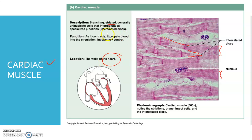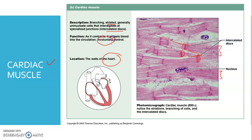Cardiac muscle also consists of intercalated discs. You can see the intercalated discs here. The function of cardiac muscle is that as it contracts, it propels blood into the circulation. We know that the heart's role is to propel blood for circulation. Importantly, all of these functions happen involuntarily — without our intention.